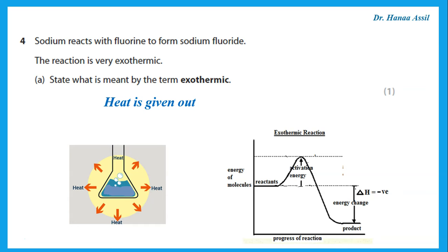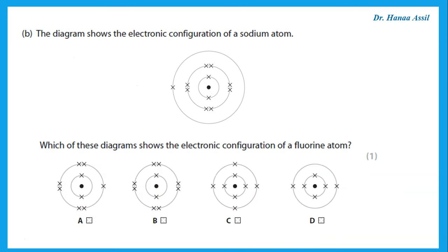Its energy profile diagram would show that the activation energy is the difference in energy from the reactants to the top of the curve, and delta H is the difference in energy from reactants to products. The diagram shows the electronic configuration of a sodium atom. Which diagram shows the electronic configuration of a fluorine atom?